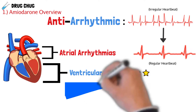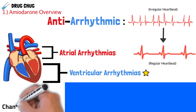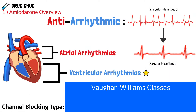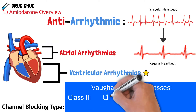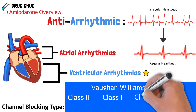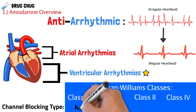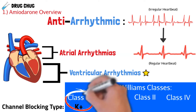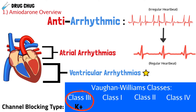When we talk about antiarrhythmics, there are a lot of different antiarrhythmic agents out there. The way we classify them is with something called the Vaughn-Williams classes, and basically they're broken up into four different groups. Amiodarone is in class three, and what that means is it blocks potassium channels on the heart.